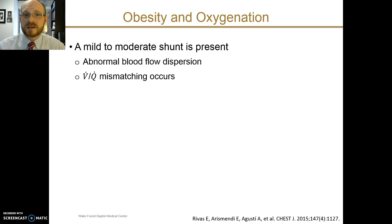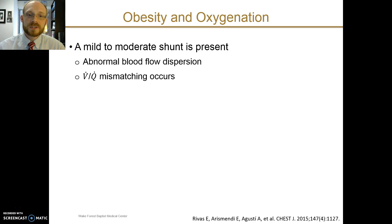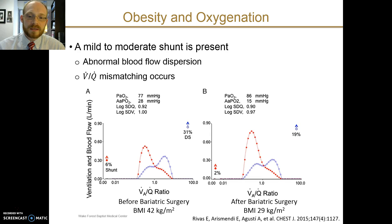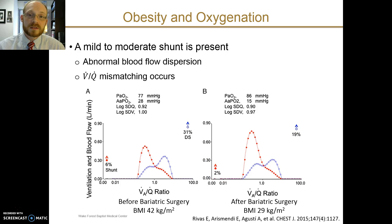Recent studies have shown that a mild to moderate shunt is present in the morbidly obese patient. There's abnormal blood flow to the lung tissue, and this VQ mismatch can be demonstrated by a multiple inert gas elimination technique. In this example of a single patient, the red circles represent pulmonary blood flow and the open circles represent ventilation. You can see that before surgery there's a 6% shunt present, and this significantly reduces after bariatric surgery has occurred and significant weight loss along with it.